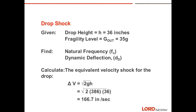The last problem we will cover is a drop shock problem. We are given a drop height of 36 inches. The item's fragility level — the amount of G's it can withstand and still operate — is 35 G's out. We want to determine the natural frequency and the dynamic deflection. Again, we first calculate the equivalent velocity shock: delta V equals the square root of 2 times G times H. Plugging in — square root of 2 times 386 times 36 — we get a change in velocity of 166.7 inches per second.